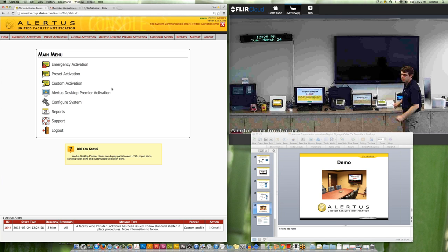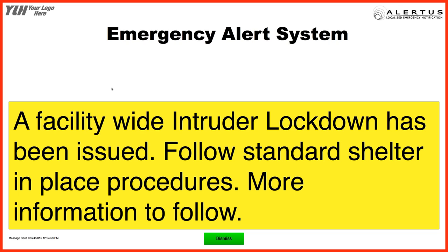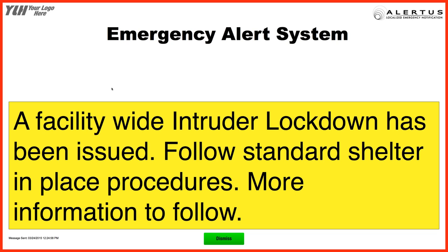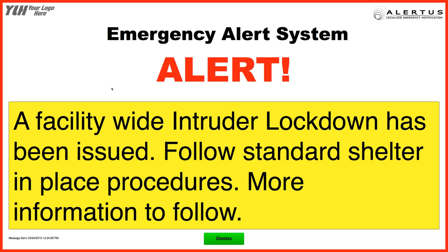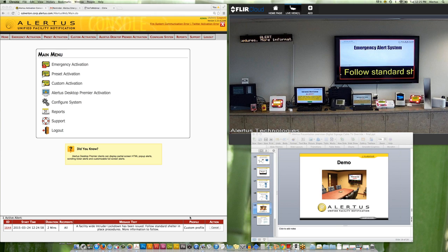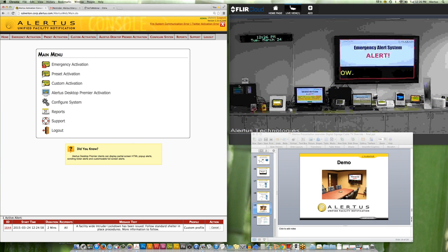I'm going to push the emergency intruder alert. That's going to communicate and take over all the different endpoints — and you'll see our cable TV takeover. We've got the beacons, VoIP phone notification, and all the different modes of notification. The full alert cascades to all devices. We've got that set up to go to the cable TV interfaces. Your digital signage interface will look very similar to this as well. A facility-wide intruder lockdown has been issued — follow standard shelter-in-place procedures.